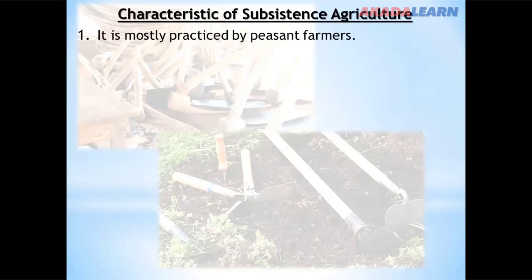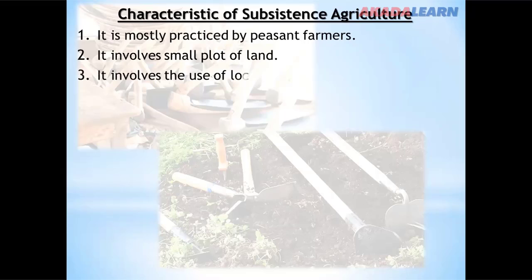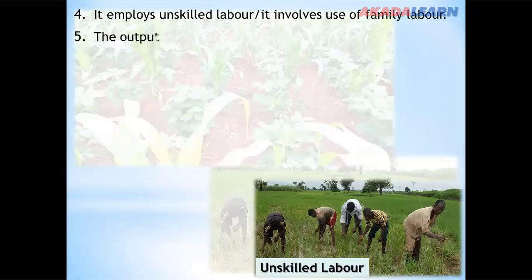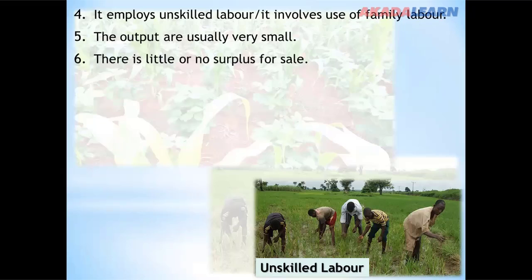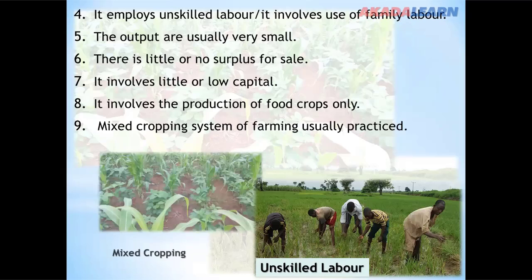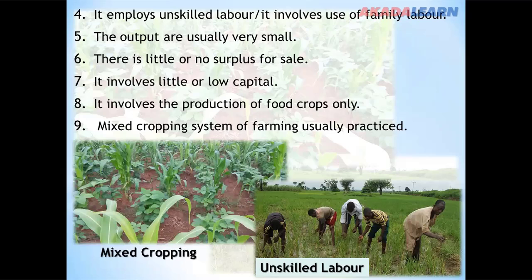What are the characteristics of subsistence agriculture? It is mostly practiced by peasant farmers. It involves small plots of land and the use of local tools. There is no specialization; it employs unskilled or family labor. The outputs are usually very small, there is little or no surplus for sale, it involves little capital, and it involves the production of food crops only. Mixed cropping is commonly practiced in subsistence farming.